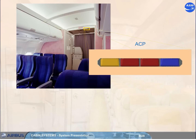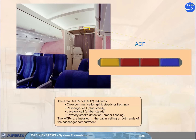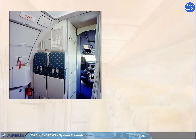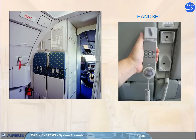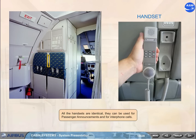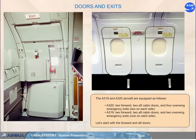The ACPs are installed in the cabin ceiling at both ends of the passenger compartment. All the handsets are identical; they can be used for passenger announcements and for interphone calls. The A319 and A320 aircraft are equipped as follows.